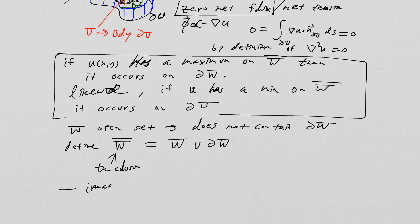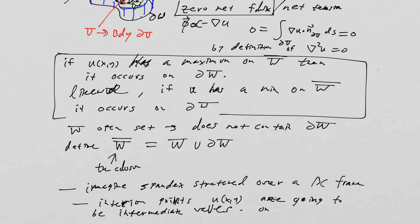Imagine that spandex stretched over a boundary condition frame. We'd imagine all the interior points u of x comma y are going to be intermediate values, and that only on the boundary do we see maxima and minima. So to understand that, I think what we have to do is come up with a proof of this fact. And I also want to show an example just to show why this is true.